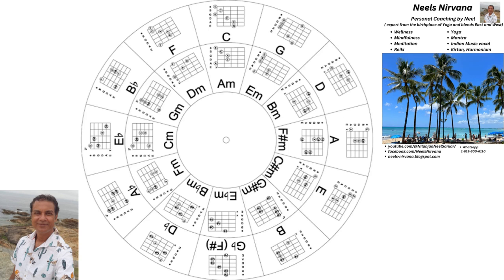One thing to notice is that the note on the left — for example, if you look at C — the chord or box on the left is F, which is the fourth in that particular scale. So C, D, E, F is the fourth. On the left is the fourth, on the right is the fifth of C, or any other box.